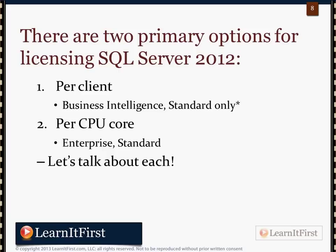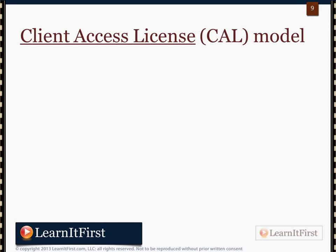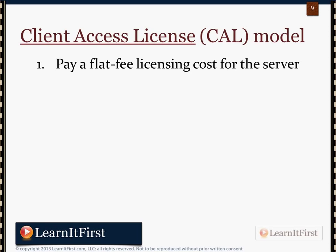We're going to talk about each of these. In this video we'll focus on the per-client model. The client access model — the per-device model, the per-user model — is called the CAL model: client access license. It's really a two-step process. Number one, you pay a flat fee licensing cost for the server license.